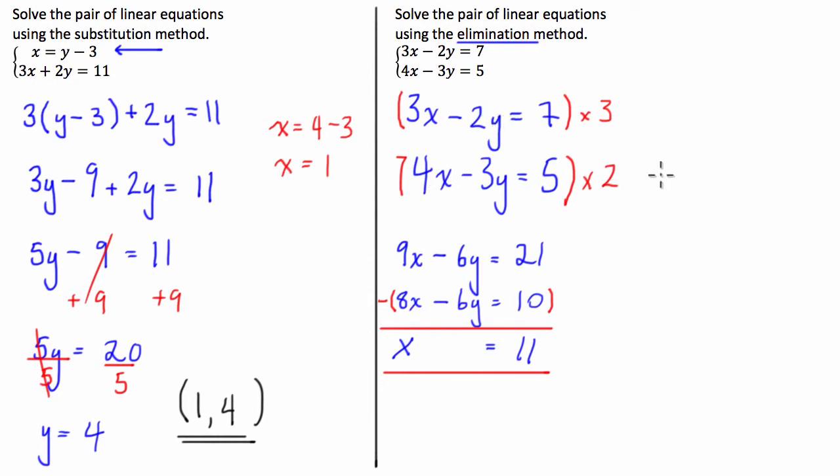So we're going to have, I'll put it into the second one, we have 4x so 4 times x which we know is 11, so 4 times 11 minus 3y equals 5. We multiply that bracket, 44 minus 3y equals 5.